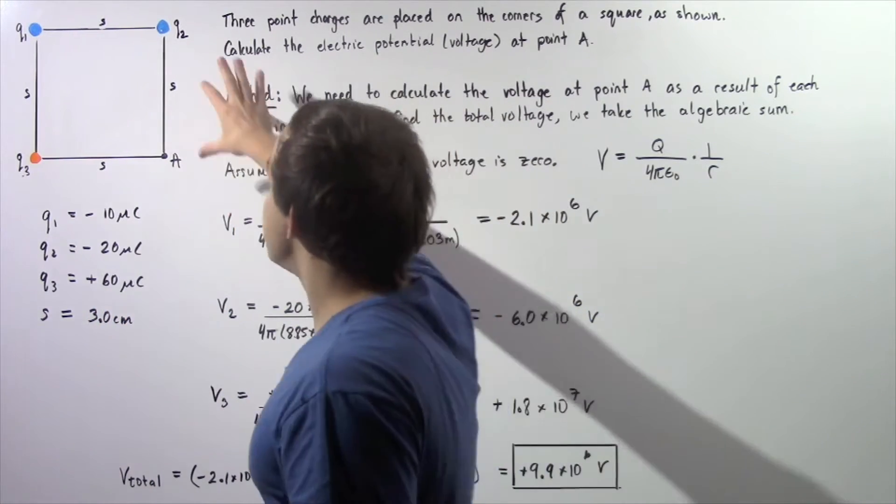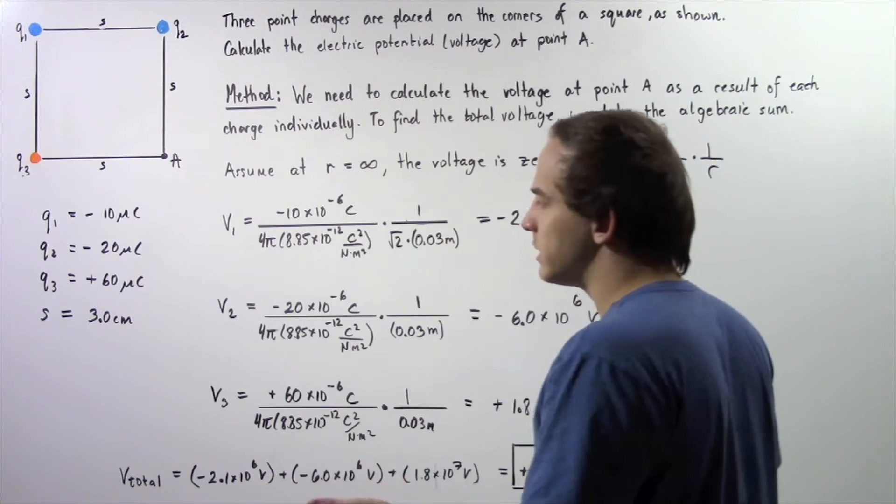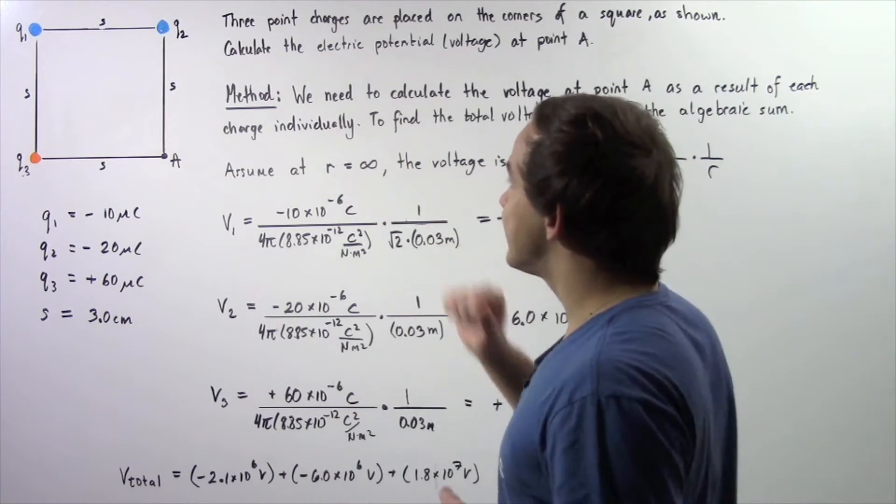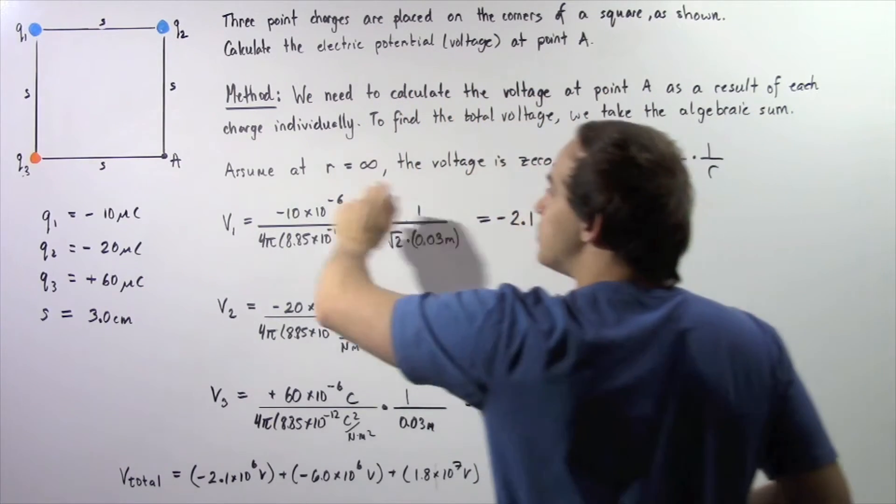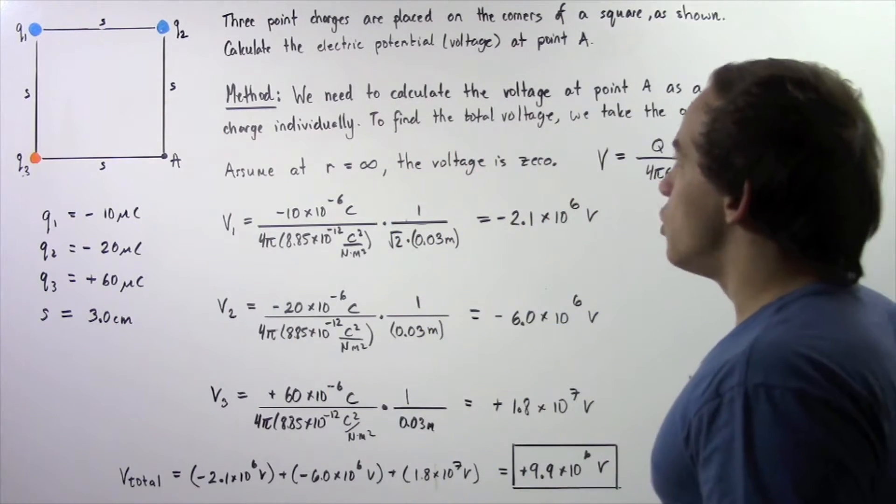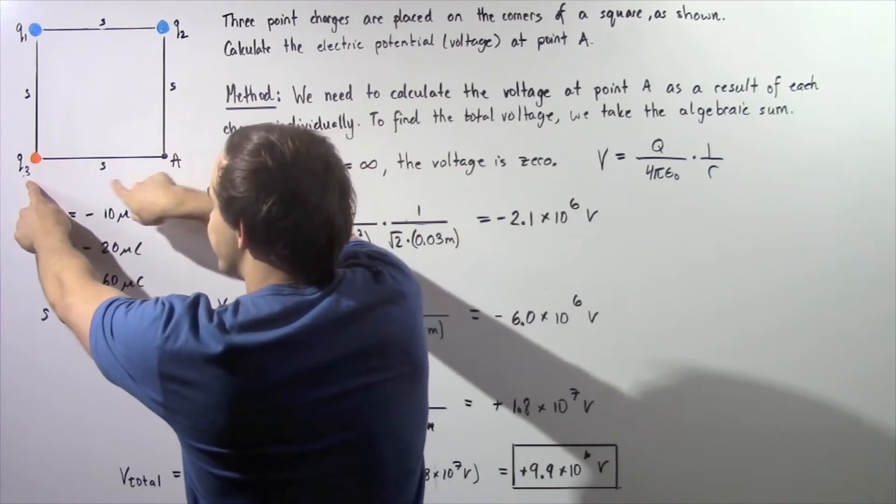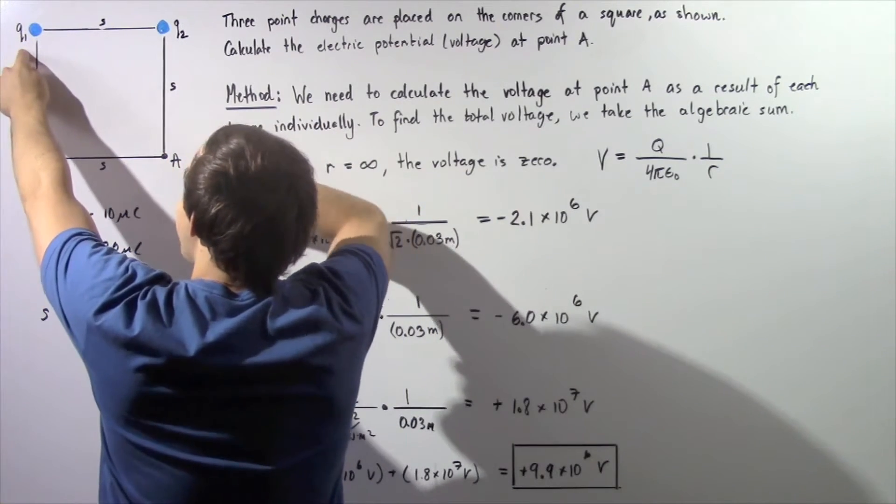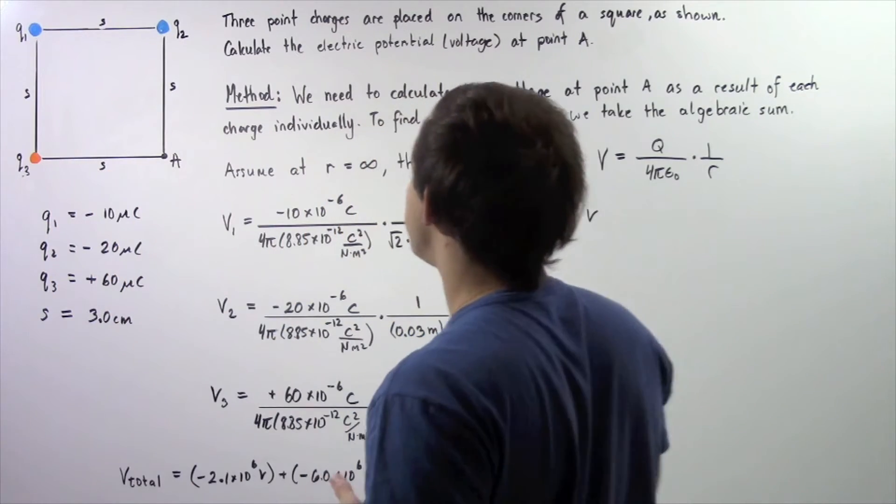The length of the side of our square S is equal to 3 centimeters, or equivalently 0.03 meters. We want to calculate the electric potential, the voltage at point A, which is given to be the fourth corner of our square. Notice the distance between this charge and point A, and this charge and point A is simply S. But the distance between point charge 1 and A is given by radical 2 multiplied by the length of the side.